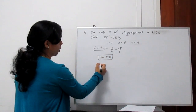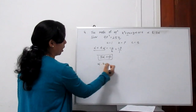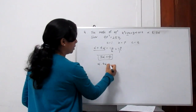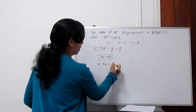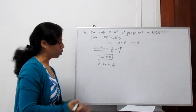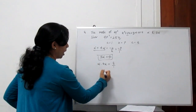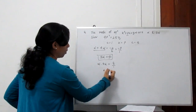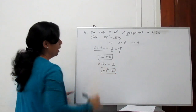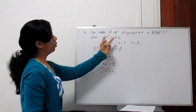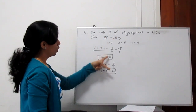For the product of roots: alpha times 4 alpha equals c by a, where c is q and a is 1. So 4 alpha² equals q.